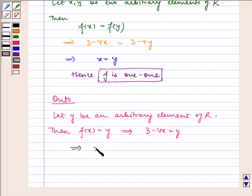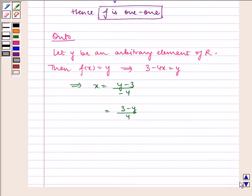Which implies x = (y - 3)/4, which is equal to (3 - y)/4. Clearly, for all y belongs to R, x = (3 - y)/4, which belongs to R.